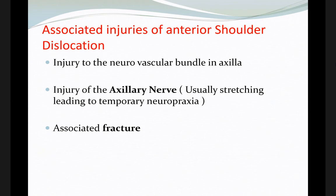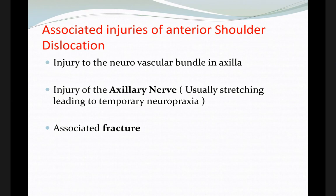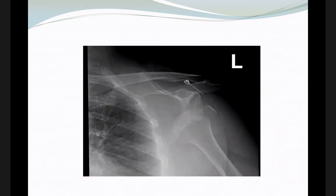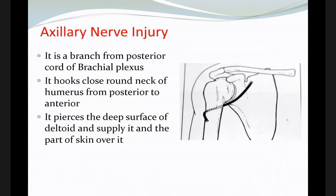There are common associated injuries with shoulder dislocation. The axillary nerve is the most commonly injured nerve with anterior shoulder dislocation, and this is usually temporary — called neuropraxia. The dislocation may also be associated with a fracture of the humeral head or glenoid. The axillary nerve is stretched during dislocation, which may cause injury.